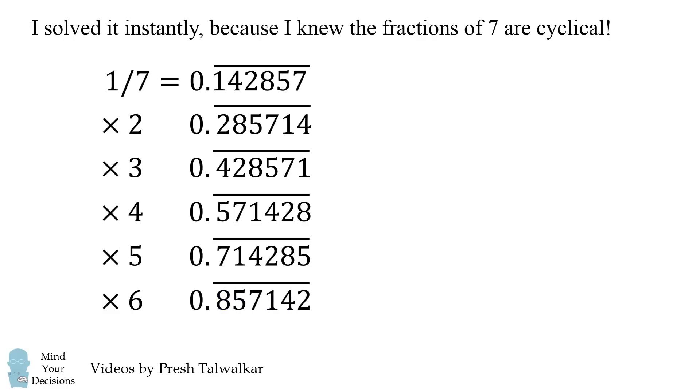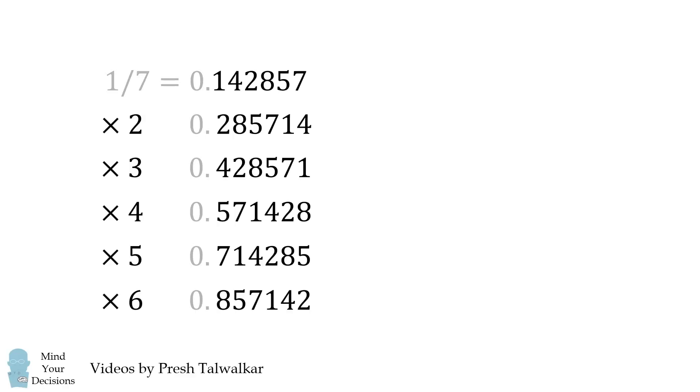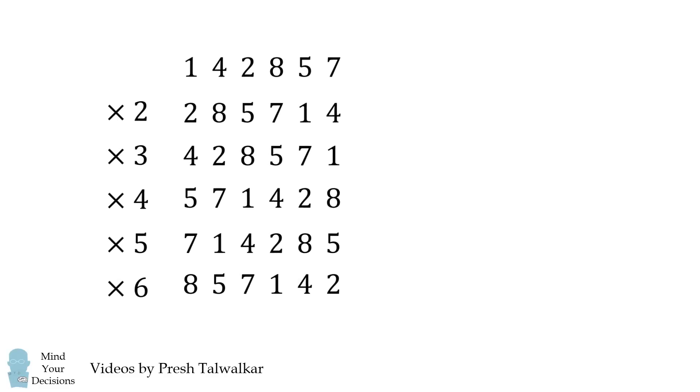So how does this help us solve the puzzle? Well what we'll do is we'll go from fractions to six digit numbers. So we'll just remove the fraction parts. And we now end up with the number 142857. And all of these multiplications are still valid. We'll now arrange these numbers into a 6 by 6 table.